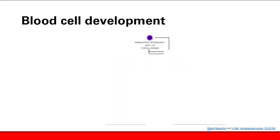So hematology, let's start with blood cell development. All the cells in our blood — that's red blood cells, platelets, white blood cells — these are derived from what we call multipotent hematopoietic stem cells. These are located in the bone marrow; these are stem cells.